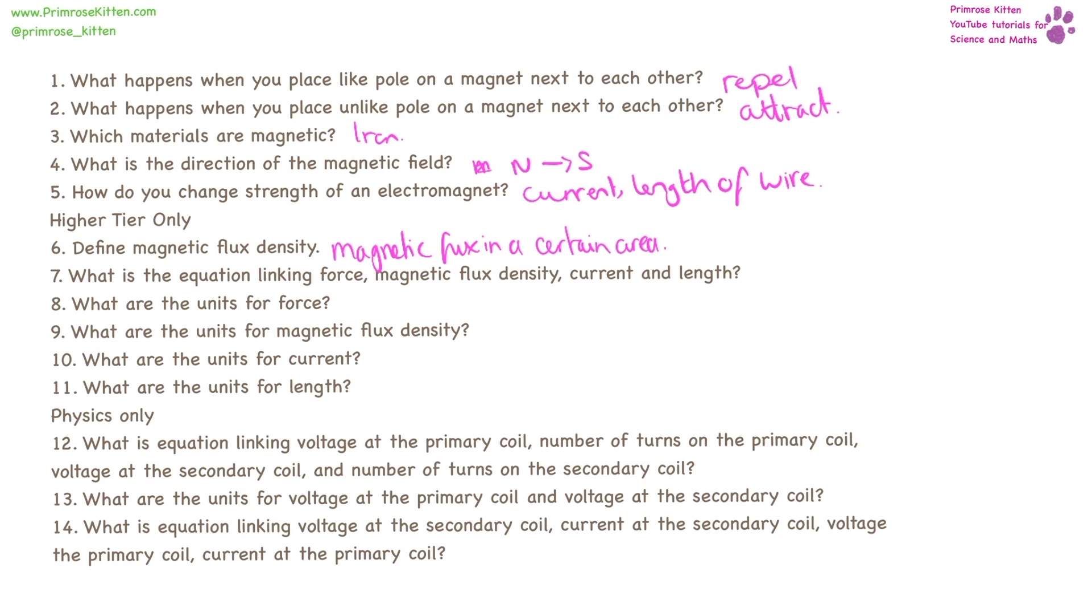This is a rather nasty equation, I'm afraid. The equation linking force, magnetic flux density, current, and length: Force equals magnetic flux density times current times length, F = BIL. I know it's confusing that we have capital I and lowercase L in there.